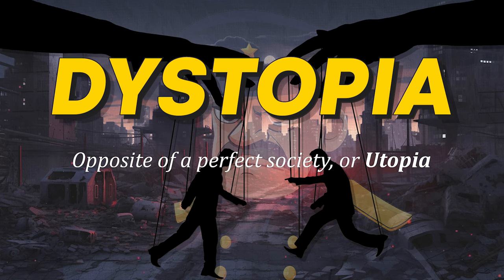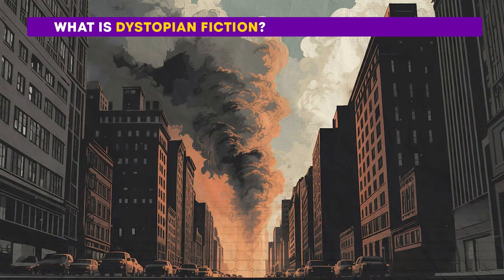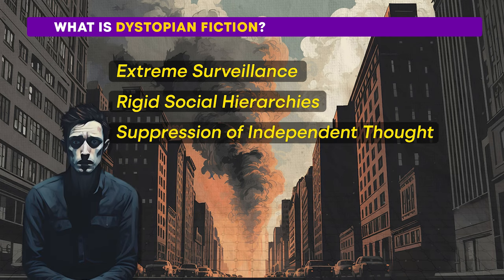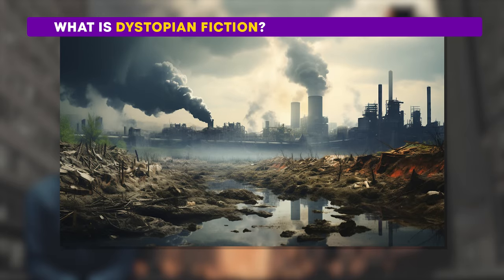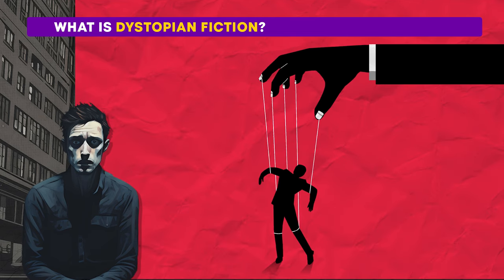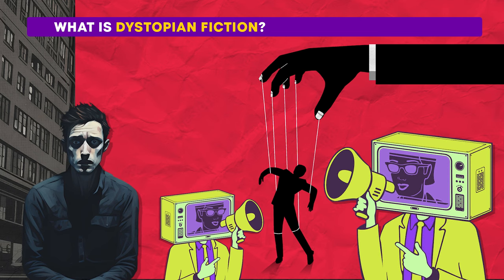Dystopia is like the opposite of a perfect society, or utopia. Instead of peace and harmony, dystopias are filled with fear, distress, and often oppressive governments in charge. Dystopian societies are often characterized by extreme surveillance, rigid social hierarchies, and the suppression of independent thought. Things are very grim — you might see environmental disasters like pollution or extreme weather making life harder. Governments in dystopias often control every aspect of citizens' lives, using propaganda to manipulate what people think or censoring information to keep them in the dark.